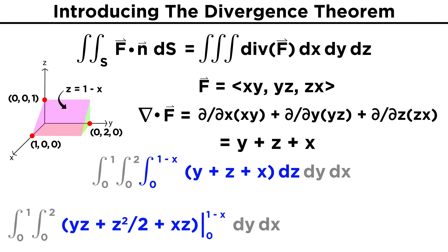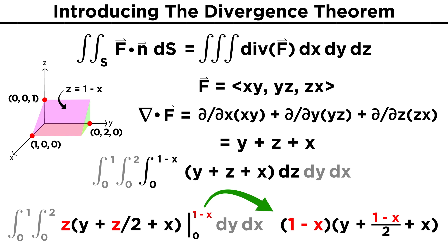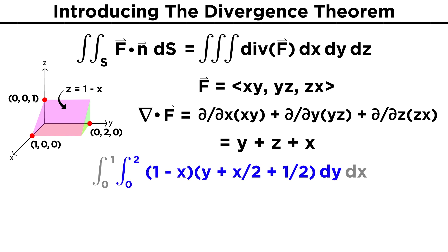Integrating Z first, we get yz plus z squared over two plus xz, where z is evaluated from zero to one minus x. Factoring out a z and evaluating, we get one minus x, y plus one minus x over two plus x, or simplifying the x terms, one minus x, y plus x over two plus one half.